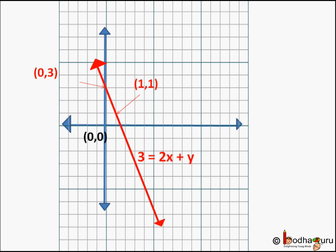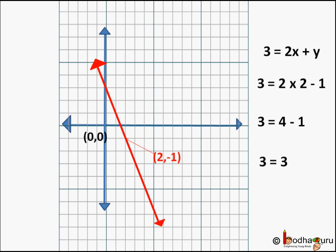All points on this red line represent different values of x and y which satisfy the equation. Let us find out. For example, the point (2, -1) is also on the line. If we put x = 2 and y = -1 in the equation, we get 3 = 2 × 2 - 1, which is 3 = 4 - 1, so 3 = 3. Point (2, -1) satisfies the equation.